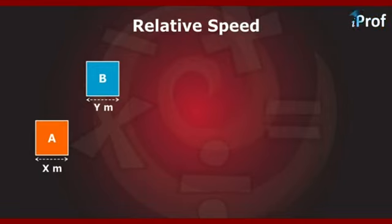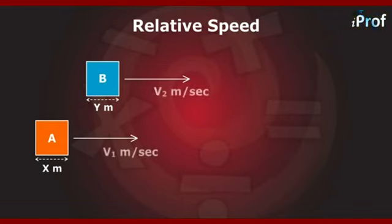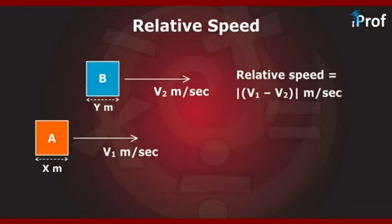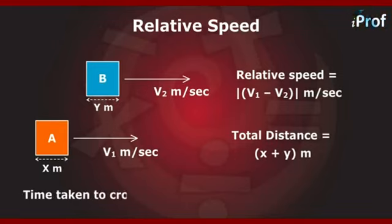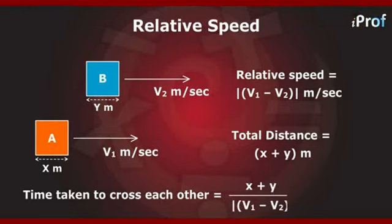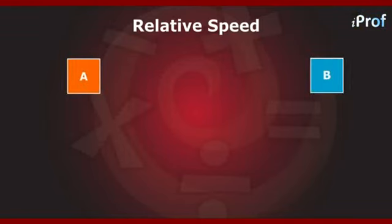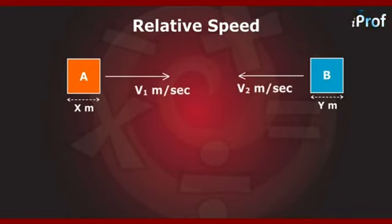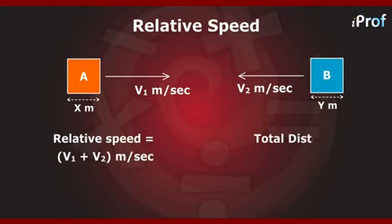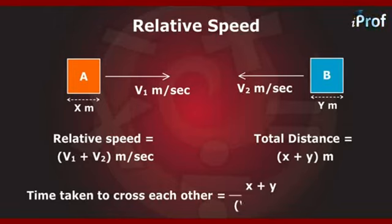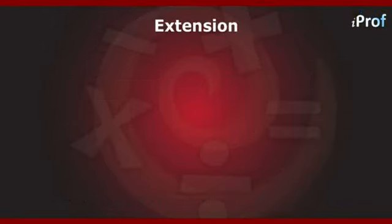Now instead of persons, let us take two objects A and B whose lengths are x and y meters respectively. Moving in the same direction with speeds v1 and v2: relative speed = |v1 − v2|, total distance = x + y, so time taken = (x + y) / |v1 − v2| seconds. Moving in opposite directions: relative speed = v1 + v2, total distance = x + y, so time taken = (x + y) / (v1 + v2) seconds. This is the extension of the concept of relative speed.